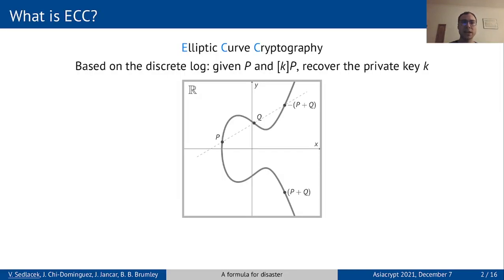First, let us recall that elliptic curve cryptography is based on the infeasibility of the discrete logarithm problem. That is, if we are given a point P and its multiple k times P, recovering the private key k must be hard.